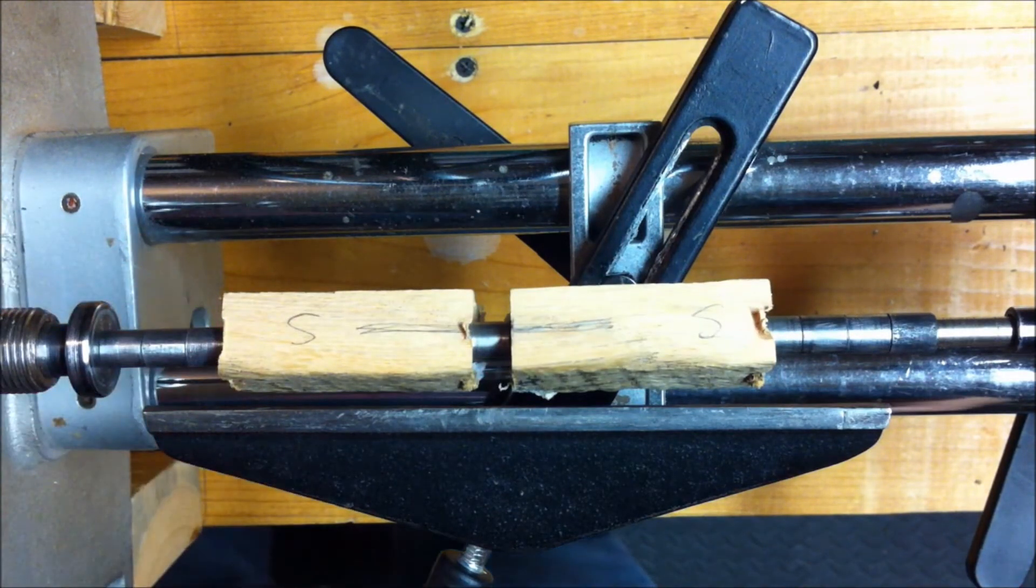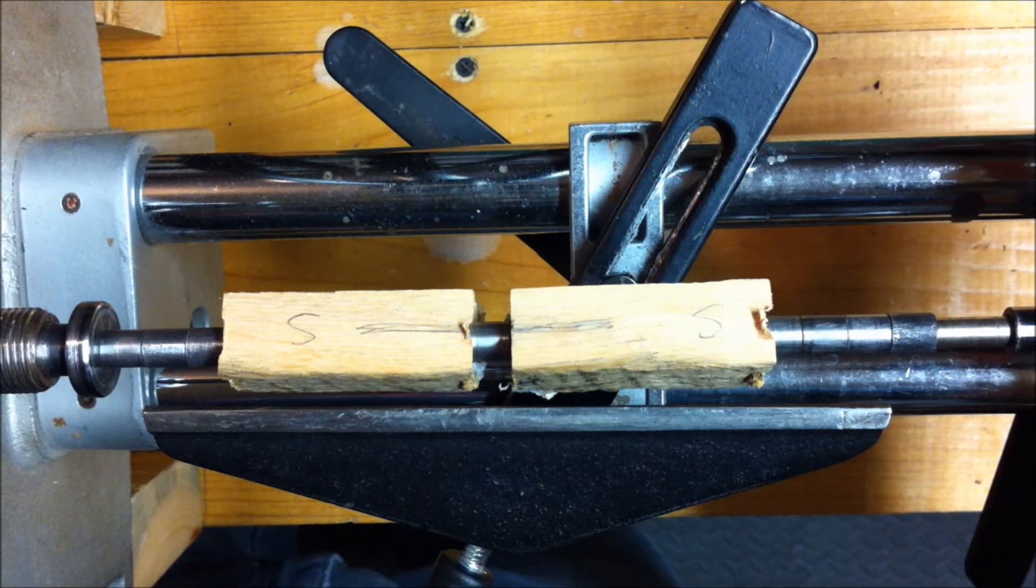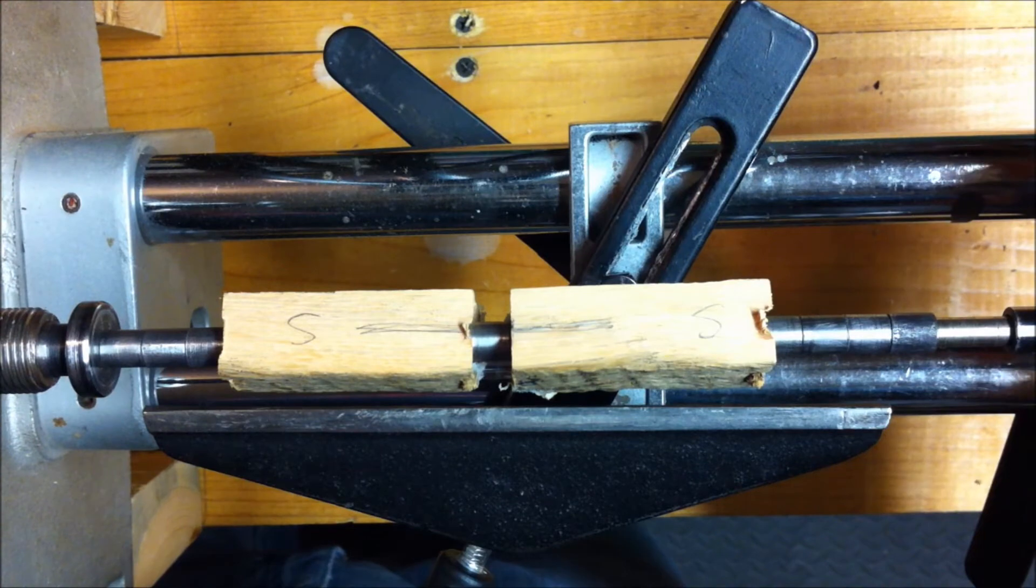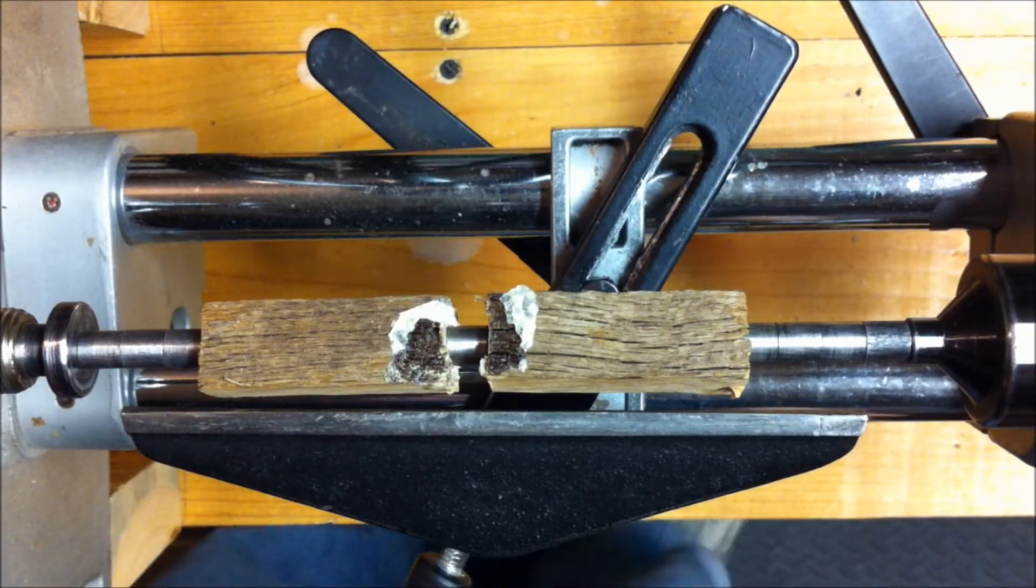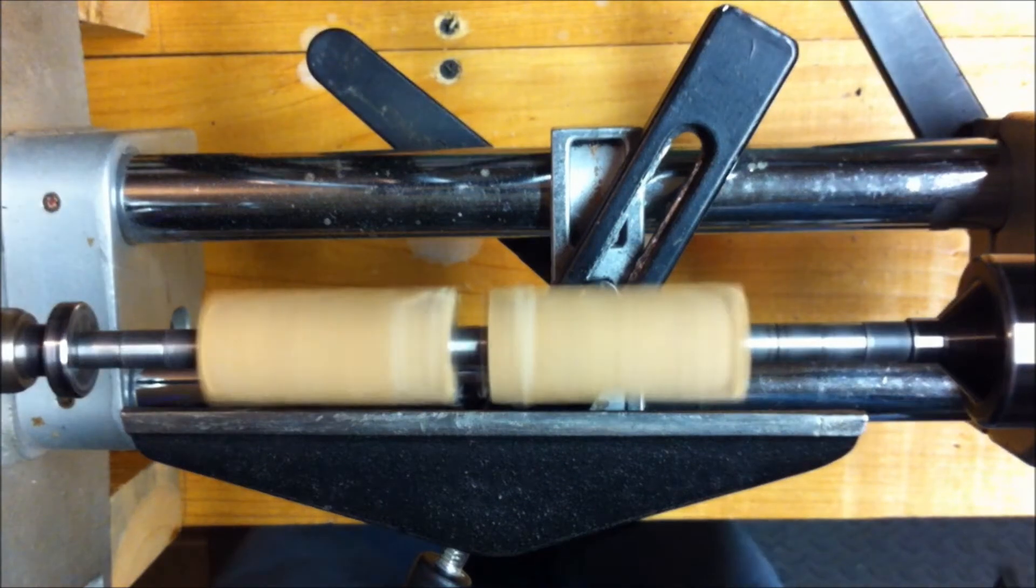We're going to go ahead now and grab our spindle gouge, and I'm going to use that to round these blanks, trim them up, and let's just see where we go from there. Alright, let's get turning. We're going to start out at about 1500 RPMs and see what happens.